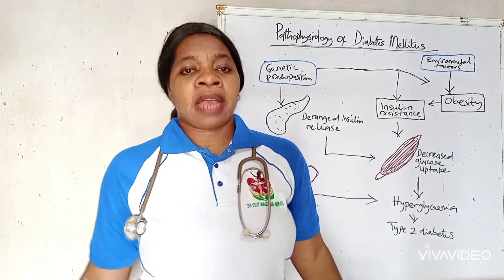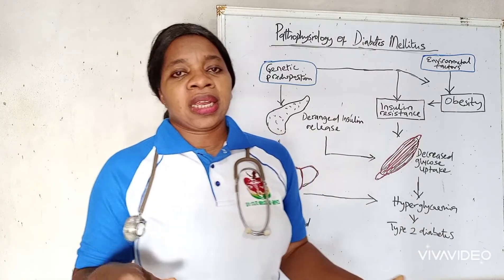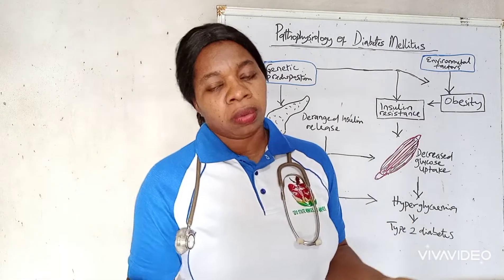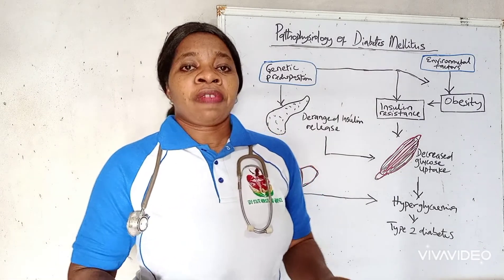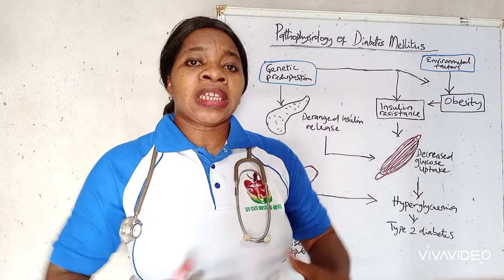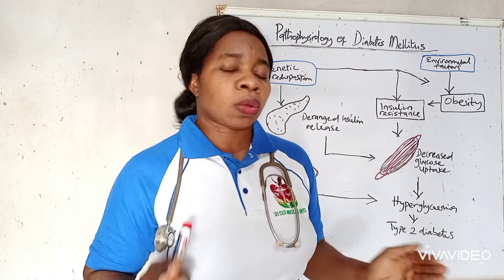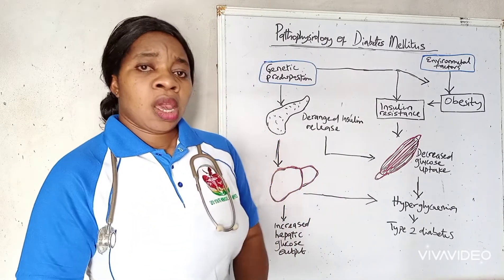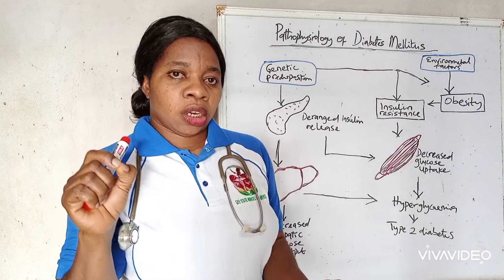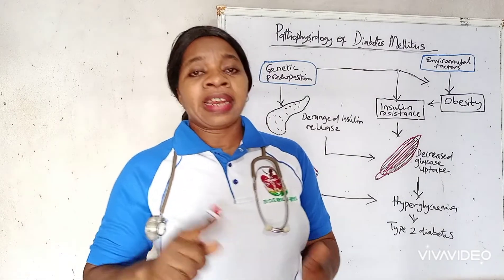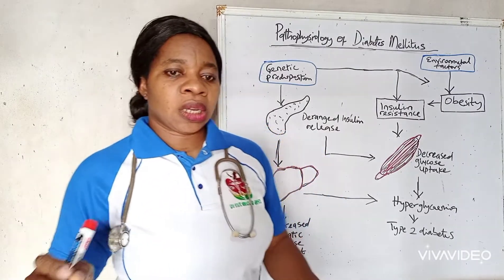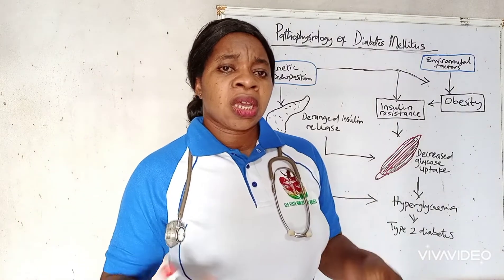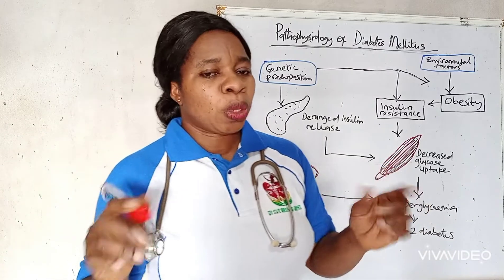Your healthcare provider will run some tests to diagnose diabetes. The first is the HbA1c test — the glycosylated hemoglobin test — which measures your average blood glucose level over two to three months. The second is the fasting blood sugar test, where your sugar level is tested on an empty stomach after not eating or drinking anything except water for up to eight hours. The third is the glucose tolerance test, where your sugar level is tested before a sweet drink, then one hour after, and again two hours later, to determine how your body reacts to glucose.